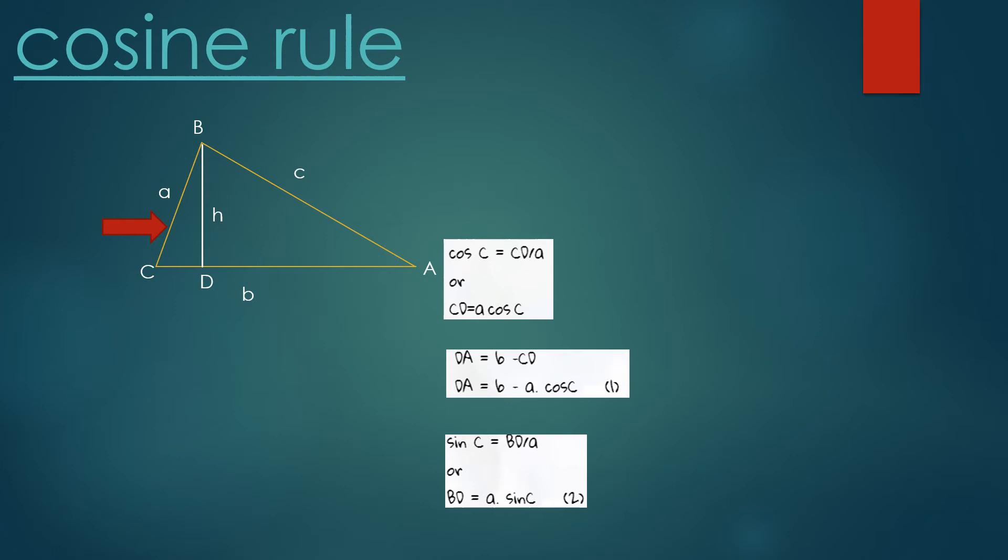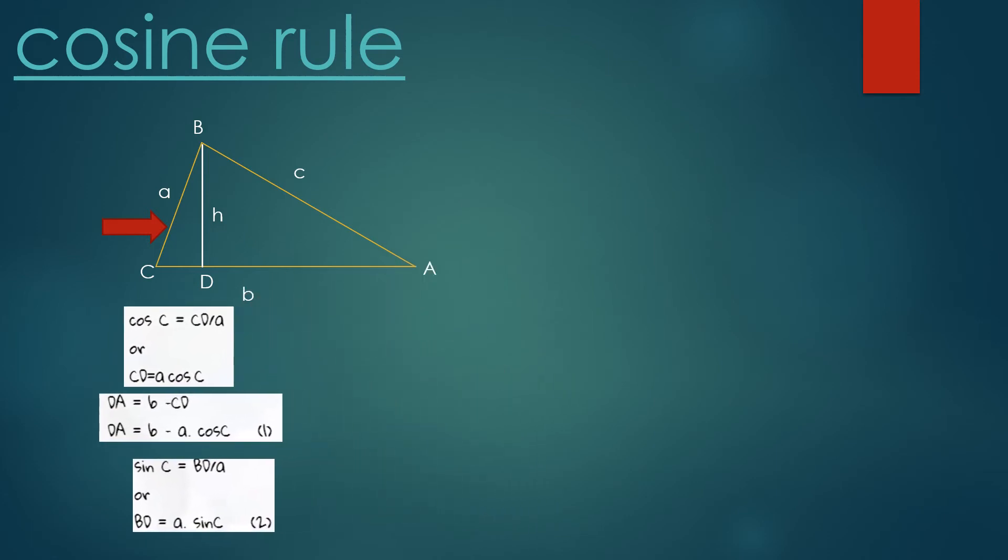Now in triangle ABD, if we apply the Pythagorean theorem, then we have c² = BD² + DA². Here, c² is the hypotenuse.